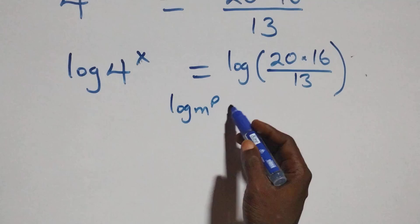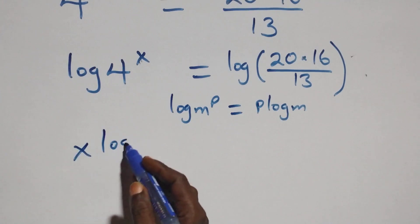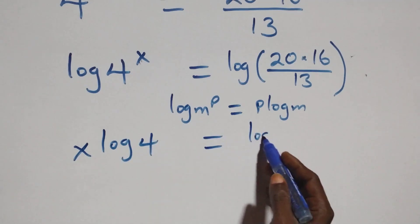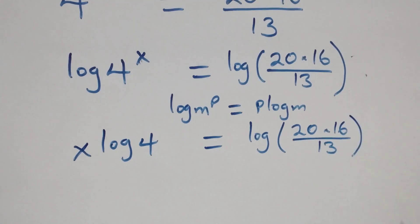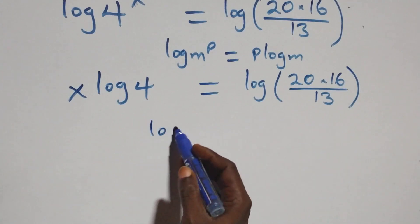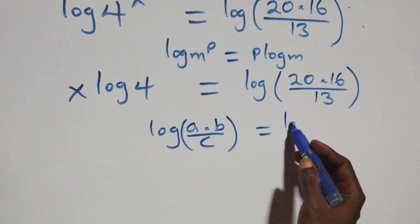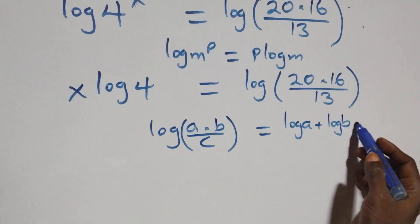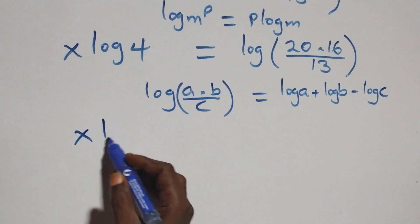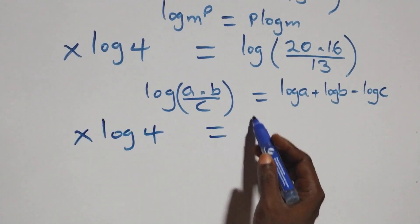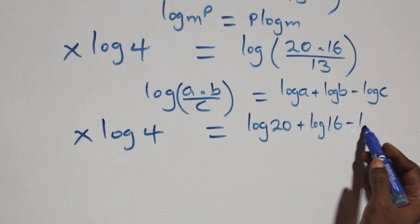When we have log m raised to power p, this is the same thing as p log m. So this becomes x log 4 equals to log of 20 times 16 over 13. Then on this side, this follows when we have log a times b over c, which we can write as log a plus log b minus log c. So what we have becomes x log 4 equals to log 20 plus log 16 minus log 13.